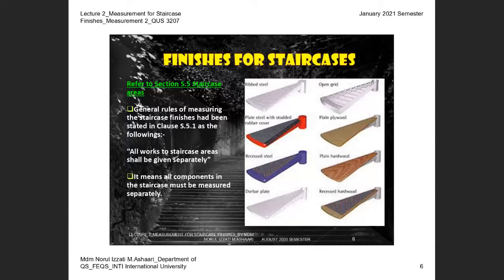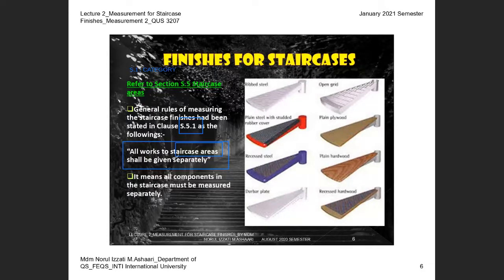Under S.5, clause S.5.1 states: 'all work to staircase areas shall be given separately.' Staircase area includes the tread, the riser, the landing slab, the landing beam, edges of landing slab, and sides of landing beam. All of these are considered staircase areas. The word 'separately' means you must measure tread separately, riser separately, landing slab separately, and so on.